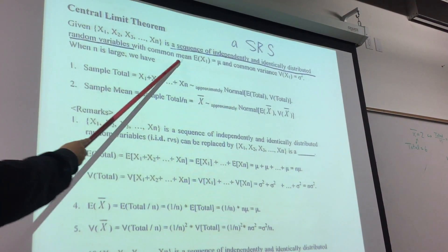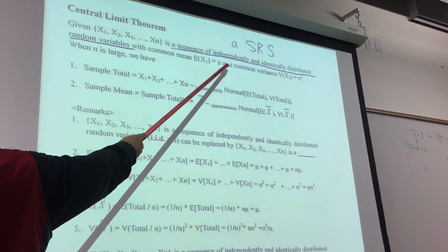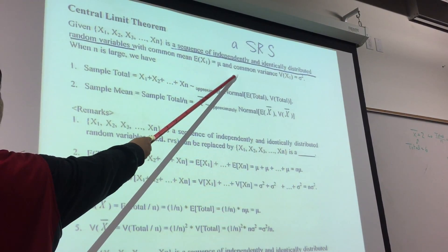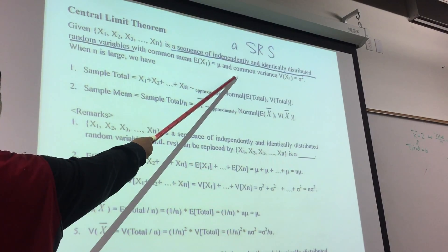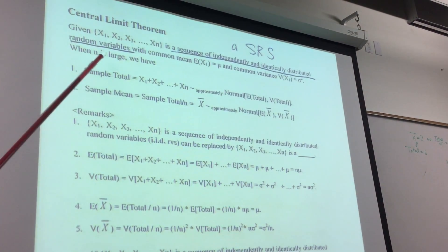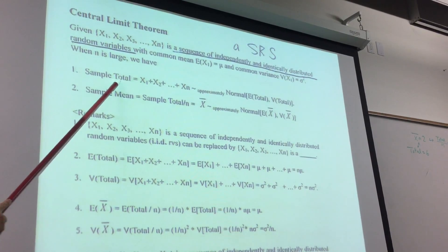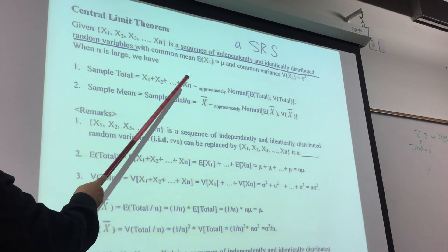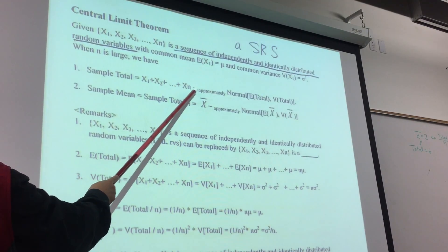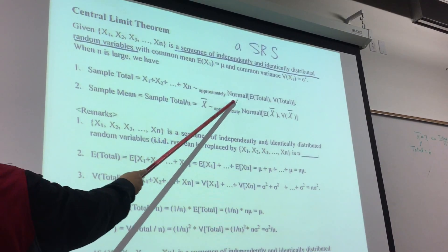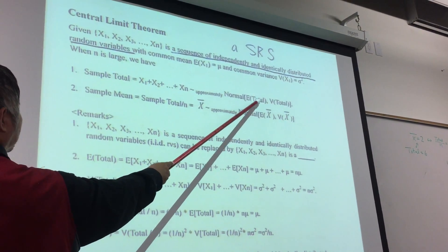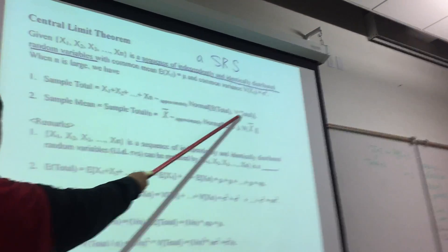With common mean E(X1) equal to μ, and common variance V(X1) equal to σ². When sample size is large, we have sample total which is X1 + X2 + ... + Xn, which will follow approximately normal with mean of the sample total and variance of the sample total.